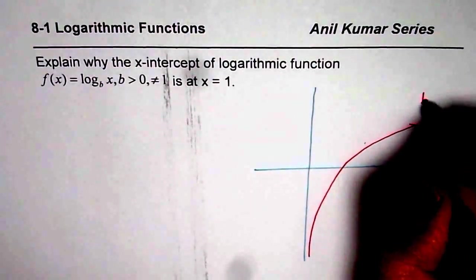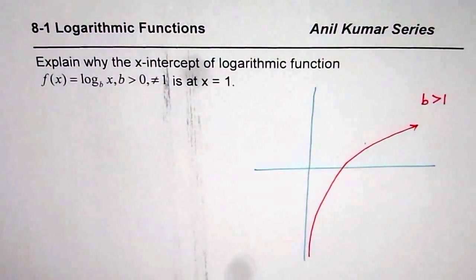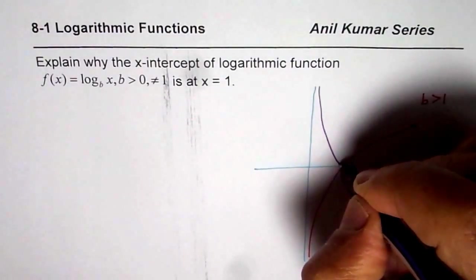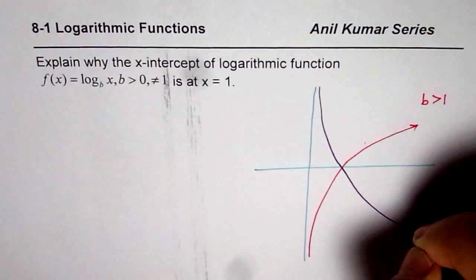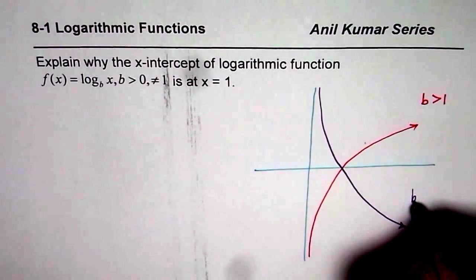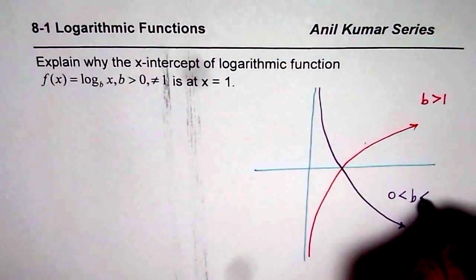This is when b > 1. Or you may get a graph which is kind of like this. Let me just show you the other graph also. Kind of like this. This is when b is greater than 0 but less than 1.